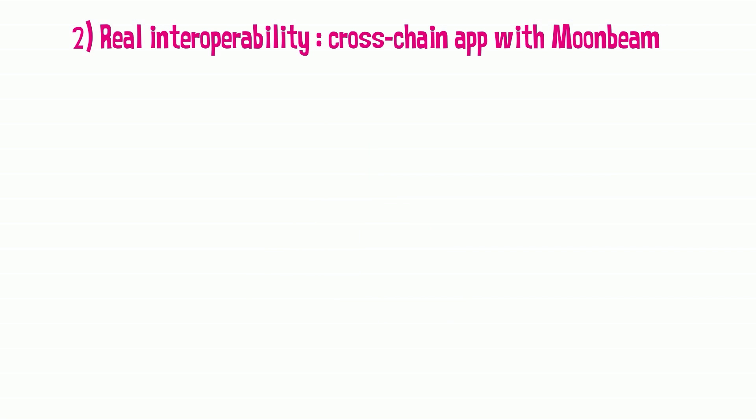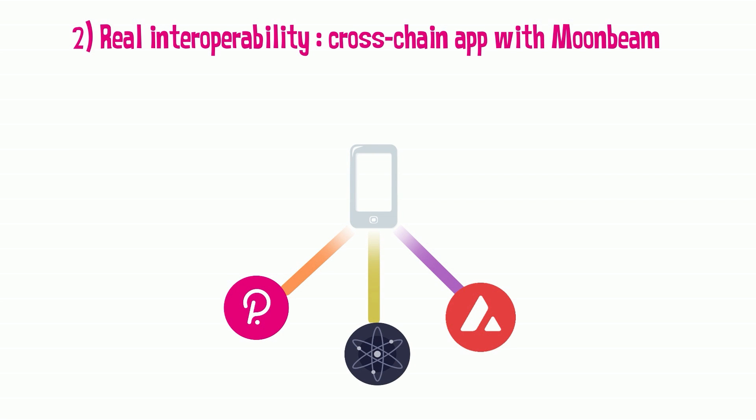As another example, a cross-connected lending and borrowing application would allow smart contracts to access collateral on any chain, because it would be visible and usable through the cross-chain connection. This is an absolute game-changer and a huge step for the future of Web3.